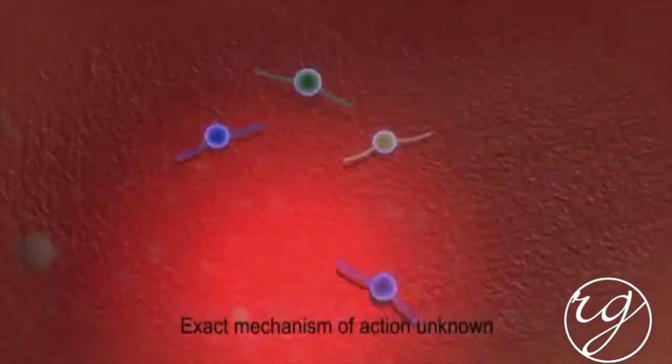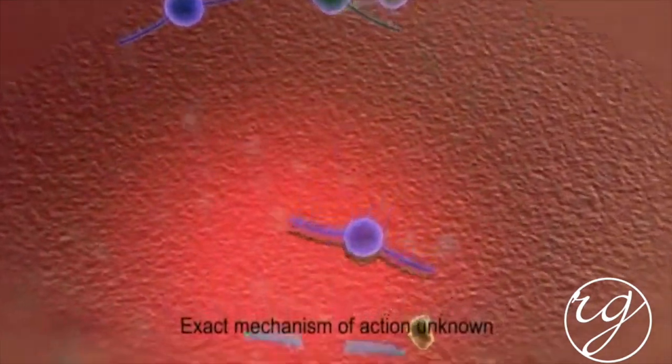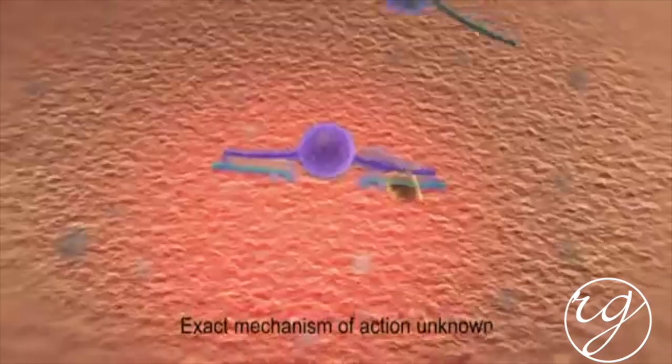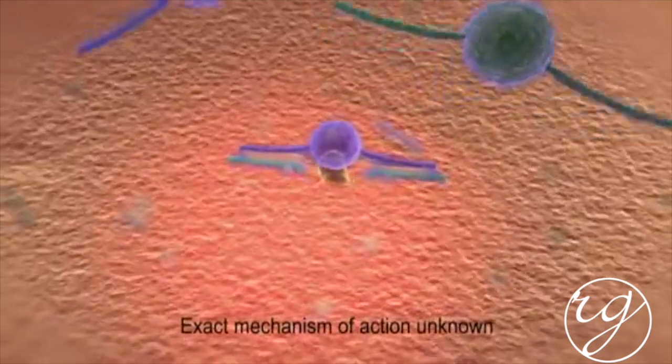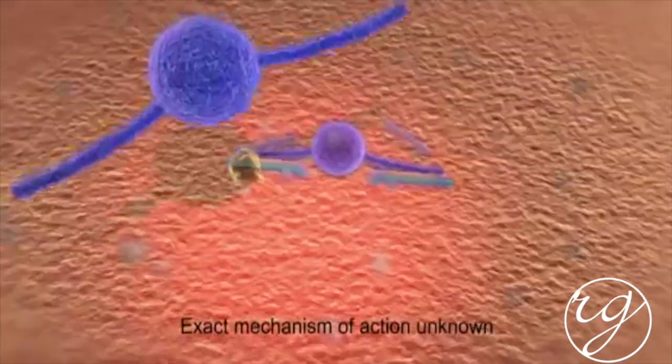In sensory neurons, the light chain is believed to cleave SNAP25 by a similar mechanism, thereby blocking the release of neuropeptide neurotransmitters and inhibiting the sensitization of pain nerves.